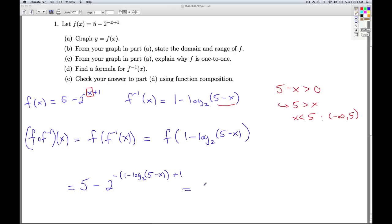Now I simplify. This is 5 minus 2 to the negative 1 plus log base 2 of 5 minus x plus 1. The negative 1 and the positive 1 cancel each other out, and I get 5 minus 2 to the log base 2 of 5 minus x. So once again, by definition, the exponential function 2 to the x and the logarithm base 2 are inverse functions. So these undo each other, and I'm just left with 5 minus the quantity 5 minus x. Distributing the negative through, sure enough, I get x, same as before.